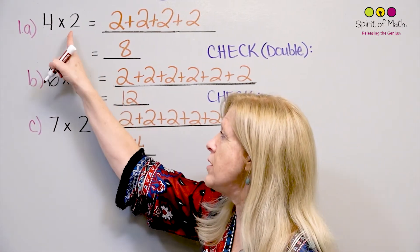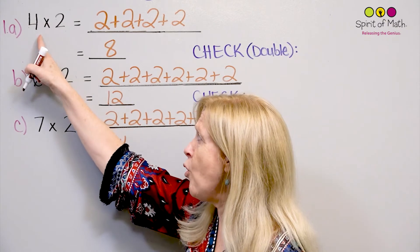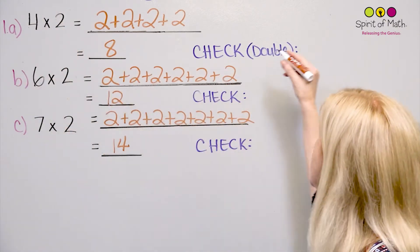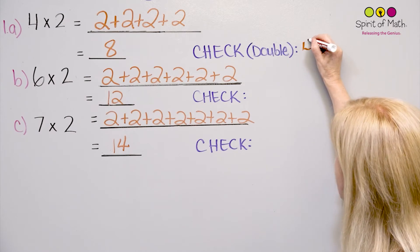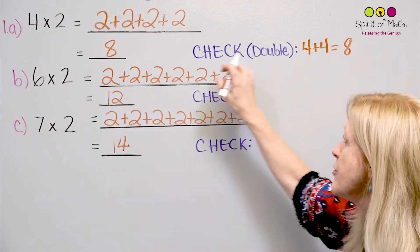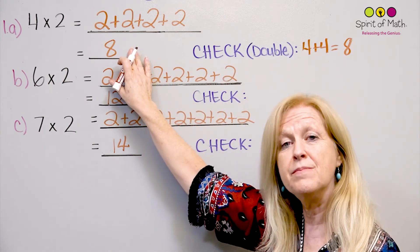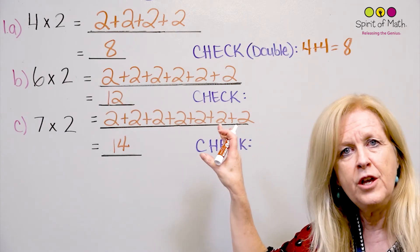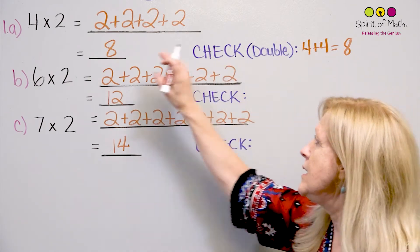If you're doubling the 4, this is 4 2 times. That's what that means. So you're doubling the 4. So if you double the 4, you've got 4 plus 4, and 4 plus 4 is 8. Look, you got the same answer. And it's much faster than having to write out all these 2's all the time.